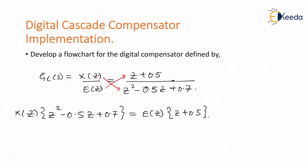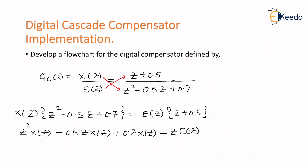Now we expand the terms. After expanding, we get the expression: z squared times X(z) minus 0.5z times X(z) plus 0.7 times X(z), which equals z times E(z) plus 0.5 times E(z).